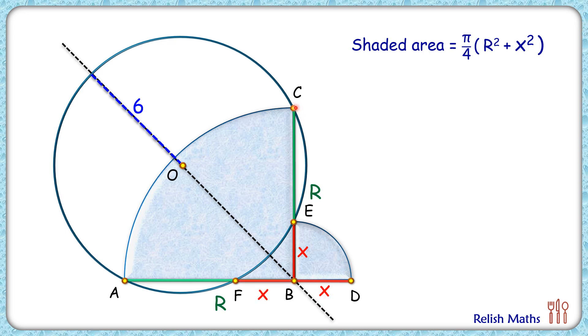Now here let's join CF and if we look at this triangle CFB, here angle B is angled by a quadrant so which is 90 degrees. In this triangle CFB applying Pythagoras theorem we have got base as x and height as capital R, so x² + R² equals FC². This value we can replace in this equation, so we'll get shaded area as π/4 times FC². So basically now we have to find FC².